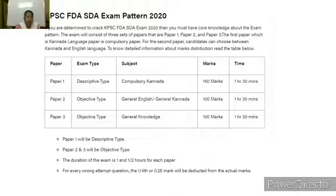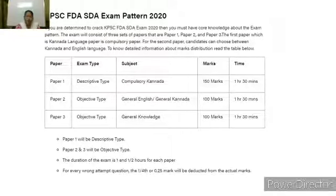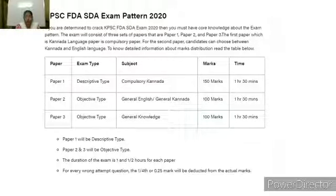The exam pattern has Paper 1, Paper 2, and Paper 3. Paper 1 is descriptive type, subject: Compulsory Kannada, marks: 150, time: 1 hour 30 minutes. Paper 2 is objective type: General English and General Kannada, 100 marks, 1 hour 30 minutes. Paper 3 is objective type: General Knowledge, 100 marks, 1 hour 30 minutes. Paper 1 will be descriptive type, while Papers 2 and 3 will be objective type. For every wrong attempt, 0.25 marks will be deducted from the actual marks — so only answer if you know the answer, as wrong answers attract negative marks.